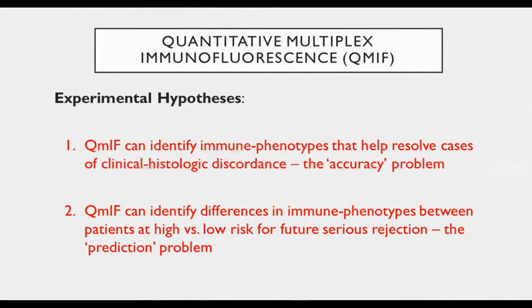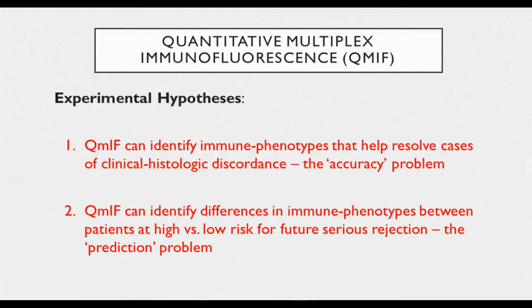In the context of strong biological rationale and a clear unmet need, we embarked on this pilot work to perform fully quantitative multiplex immunofluorescence in heart transplant tissues. We approached two specific hypotheses addressing the major clinical unmet needs: first, that QMIF could identify immune phenotypes that help resolve cases of clinical histologic discordance — the accuracy problem; and second, that QMIF could identify differences in immune phenotypes between patients at high versus low risk of future serious rejection — the prediction or risk stratification problem.